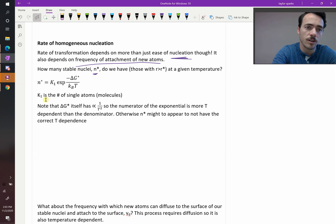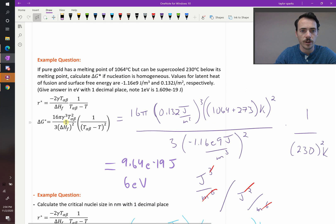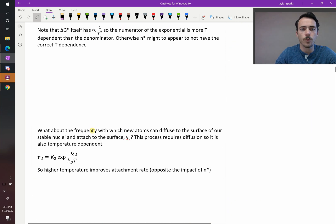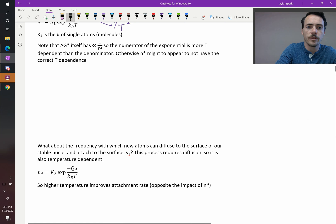But there's a catch here. This term, delta G-star, remember that it has a 1 over T-squared term in it. If we go back up to our expression for it here, it had this 1 over T-squared term in it. So we need to take into account that. Therefore, what it's going to look like, if you plotted this against temperature, you'd have the following.